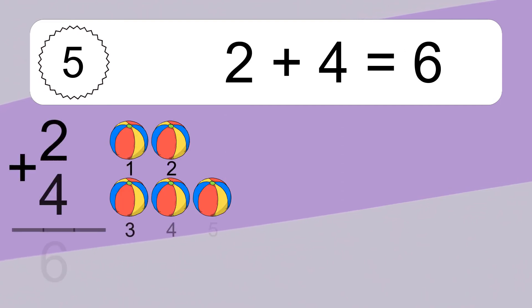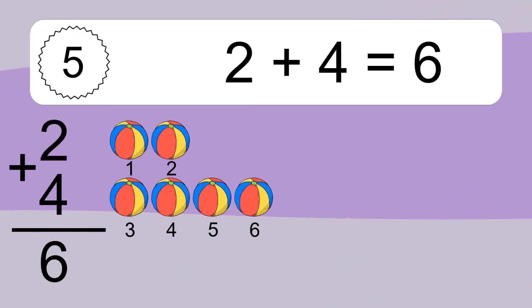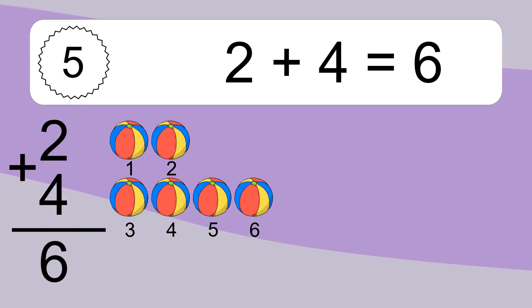2 plus 4 equals what? 2 plus 4 equals 6. Let's count it. 1, 2, 3, 4, 5, 6.